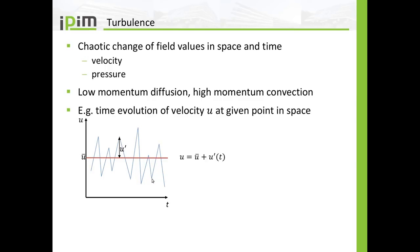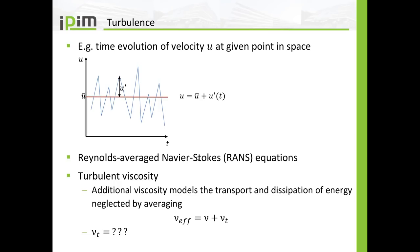Now let's come to turbulence. In the previous tutorial I talked about turbulence and turbulence modeling. To recap: turbulence is the chaotic change of field values like velocity and pressure in space and time. You will find turbulence in flows with low momentum diffusion and high momentum convection. If you measure the velocity at a given point in space in a steady-state flow, you will have a constant velocity and the velocity will oscillate around this constant value. In the Reynolds-averaged Navier-Stokes equations we say that we do not care about these oscillations and we are neglecting those oscillations, but you make an error with that.